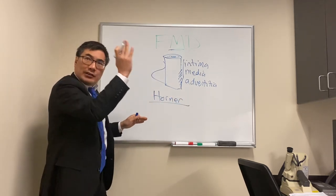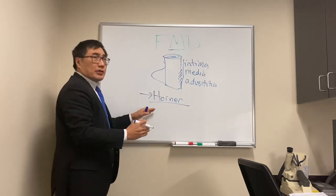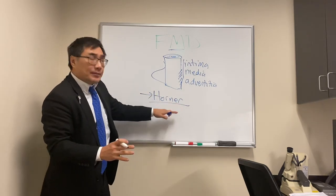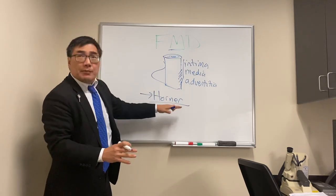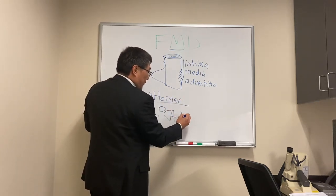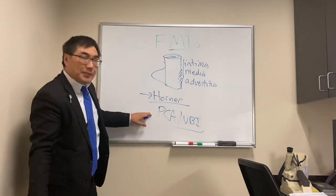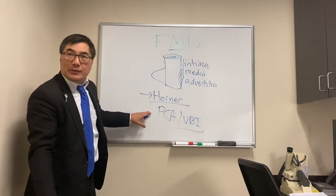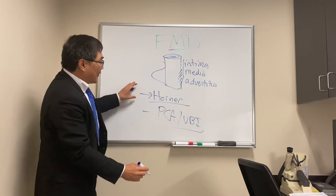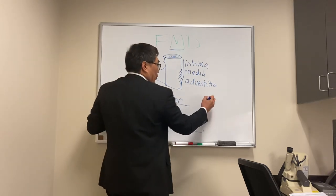If you have a carotid dissection, you might have a Horner syndrome, as the sympathetics run on the internal carotid artery. The Horner's can also appear from the vertebral system via vertebral dissection. We can get posterior cerebral artery infarctions from the vertebrobasilar system, leading to occipital lobe infarcts and homonymous hemianopsia.